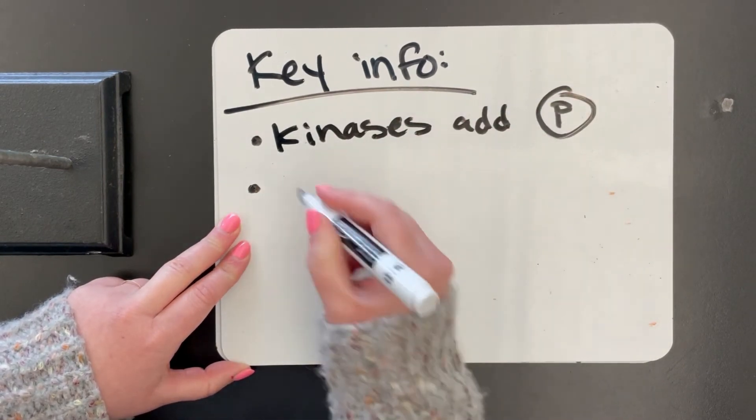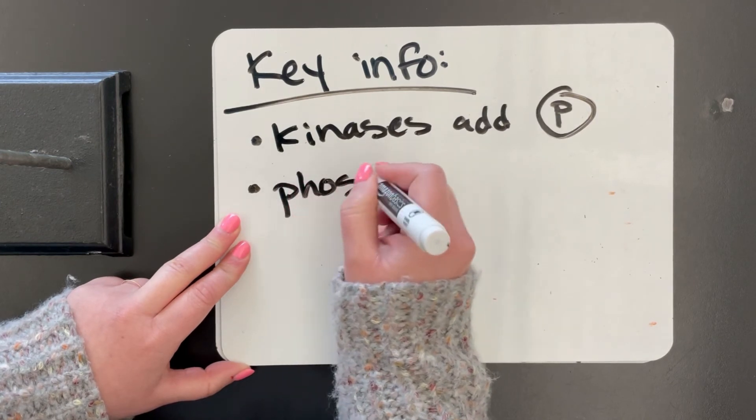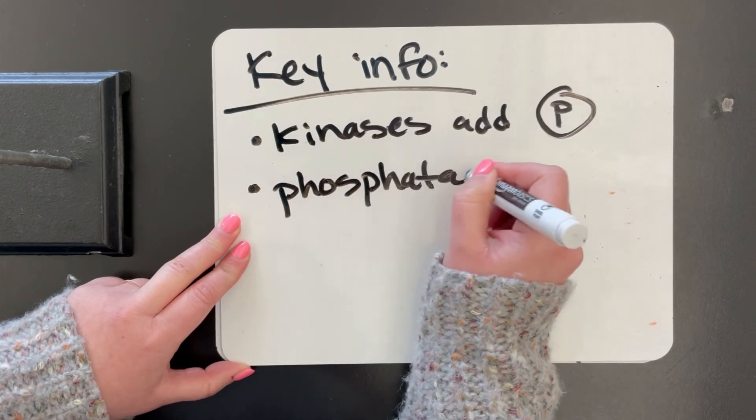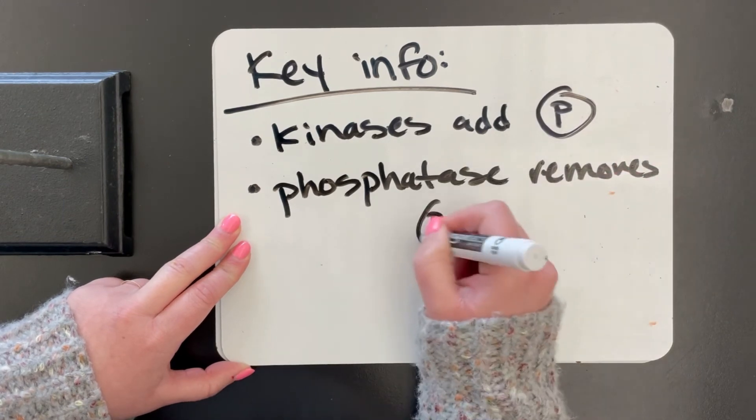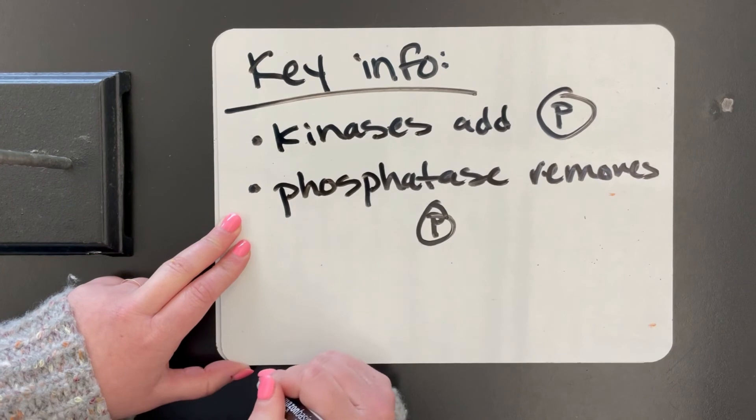And then the enzyme that removes phosphates is called a phosphatase. So they are opposites. Kinases add, phosphatases remove.